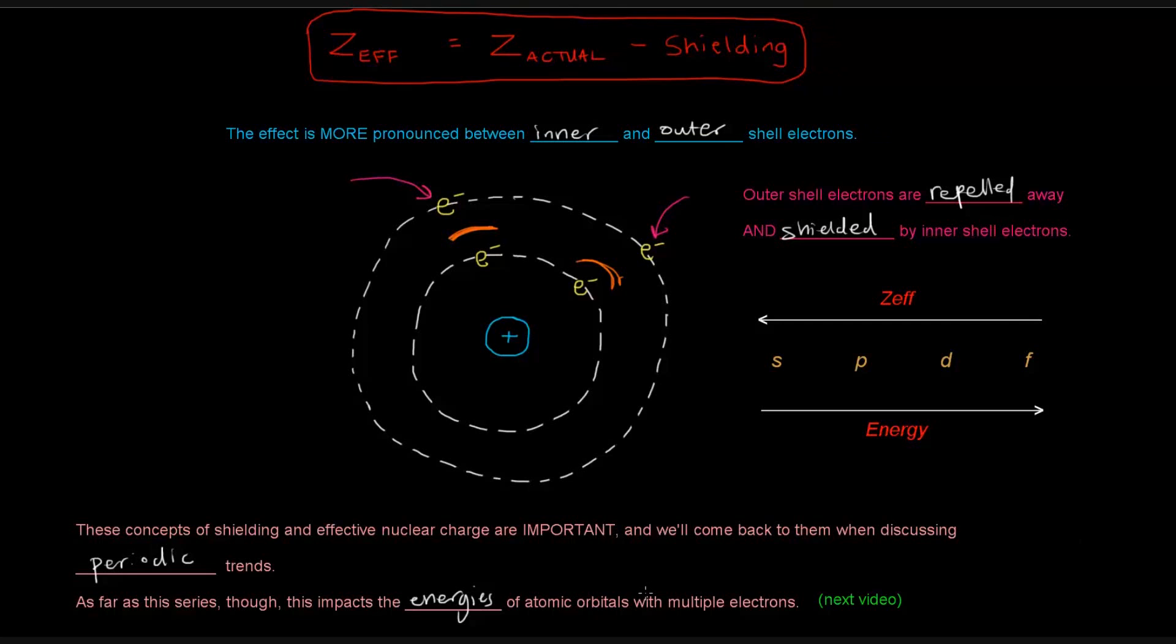if the orbitals have the same principal quantum number, then they have the same energy. That's not the case in atoms with multiple electrons. And this is part of the reason why, because of this aspect of shielding and effective nuclear charge. And that's what we'll see in the next video.